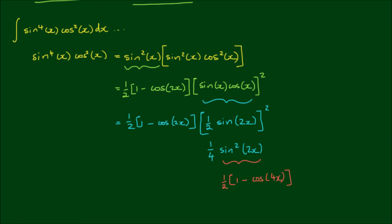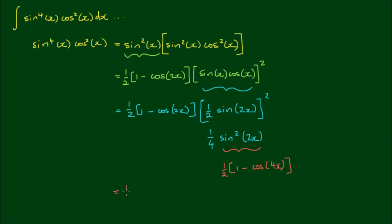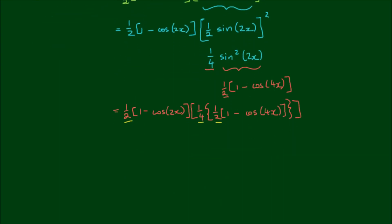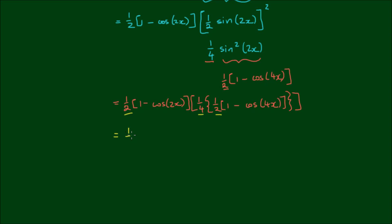Okay, now before this gets too confusing, let me write this completely out. So I have 1 half of 1 minus cos of 2x by 1 quarter by 1 half of 1 minus cos of 4x. So we have 1 half by 1 quarter by 1 half, which equals 1 on 16.